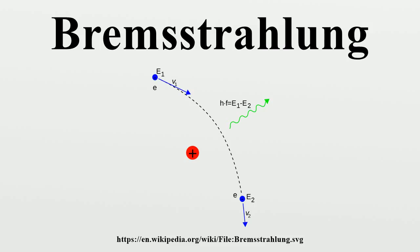Bremsstrahlung emitted from plasma is sometimes referred to as free-free radiation. This refers to the fact that the radiation in this case is created by charged particles that are free, i.e., not part of an ion, atom or molecule, both before and after the deflection that caused the emission.